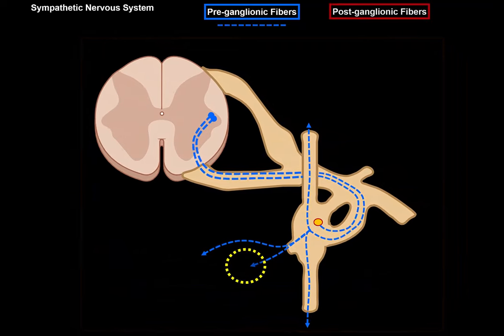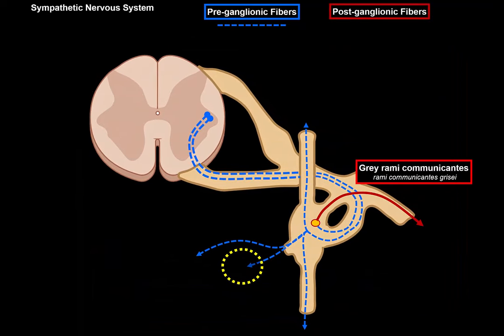After synapsing inside the ganglion, postganglionic fibers leave through the gray rami communicantes and re-enter the same anterior ramus, continuing with the spinal nerves to innervate all structures related to the branches of that spinal nerve. These fibers can also combine with fibers from other levels to form splanchnic nerves, which pass onto the thoracic viscera. For the prevertebral ganglia, post-synaptic fibers pass onto the abdomen and pelvic viscera via a visceral motor nerve plexus.